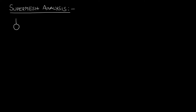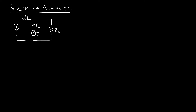Here I am considering a simple network. There is some voltage V, a couple of resistors — let us assume this as resistance R1 and one more resistance R2. Here we are having a current source; let us assume this current as I. And let's have one more loop with resistance R3, and one more resistor R4. So this is a simple network.